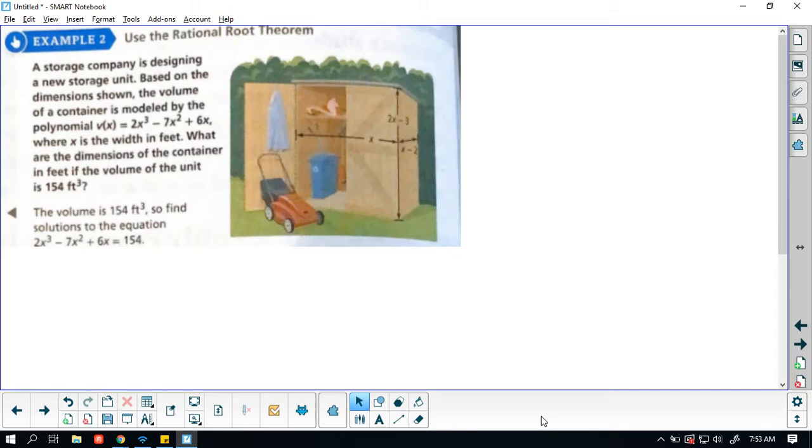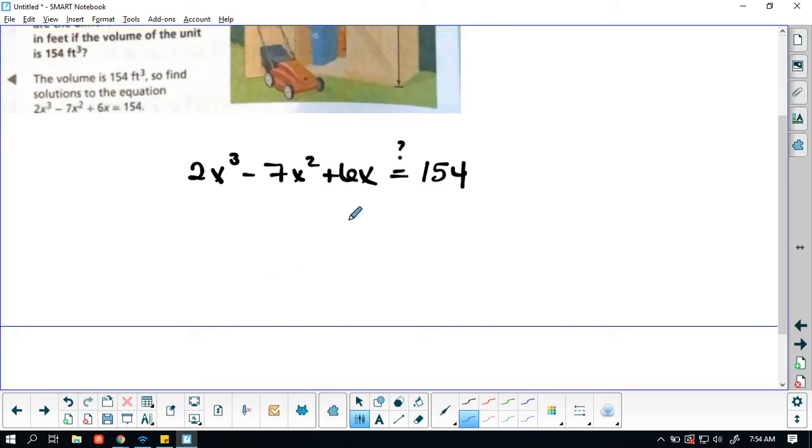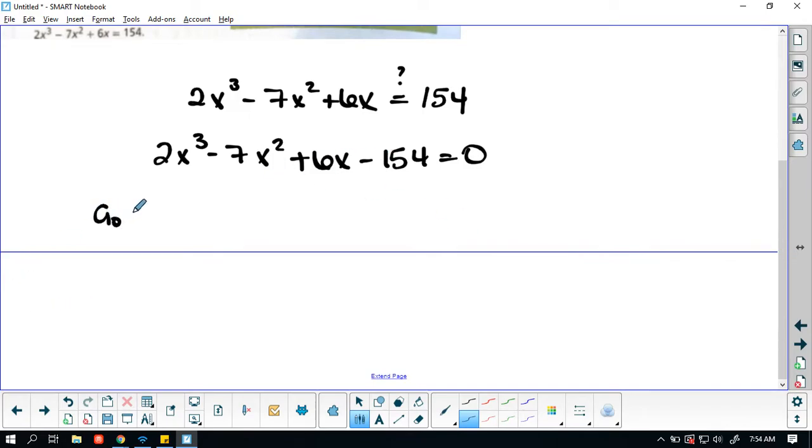Alright, so we got to determine, using the Rational Root Theorem, if 154 feet can actually be our value. So we're looking at this. This is what we're going to formulate. 2x cubed minus 7x squared plus 6x. Can this actually be 154? So then I'm going to move that 154 over by subtracting it, and now I have my A0 which is 154 and I have my AN which is 2.